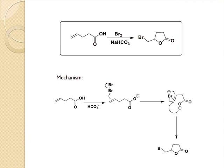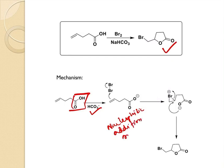So what is the mechanism? First, the deprotonation occurs at the carboxylic group by the bicarbonate base, which is a mild base. And then nucleophilic addition gives strained cyclic bromonium ion.